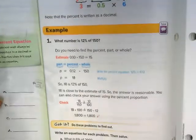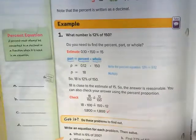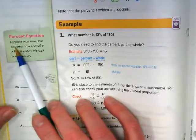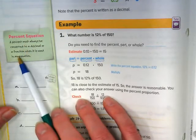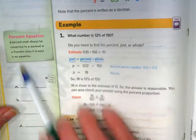So let's take a look down here. Example 1, first this tip over here, percent must always be converted to a decimal or a fraction when it's used in an equation.